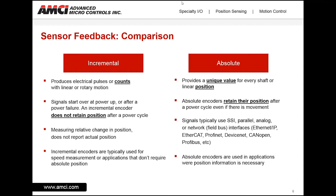For rotary sensors and position feedback in general, there are two types of outputs: incremental and absolute. Incremental sensors produce electrical pulses or counts with linear or rotary motion — think of a square wave. The signals start over at power up or after a power failure. An incremental encoder does not retain position after a power cycle, nor can it report back that the position has changed while power was off. It measures relative change of position and does not report actual position. Incremental encoders are typically used for speed measurement or applications that do not require absolute position.